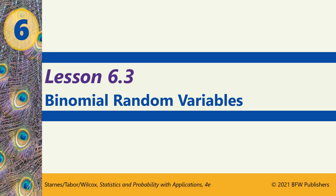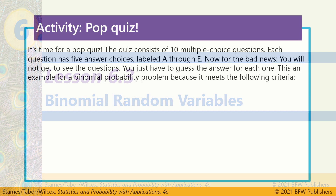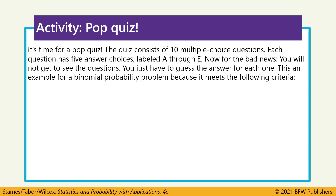6.3 Binomial Random Variables. To give an example of what a binomial random variable is, we're going to start this section with a pop quiz. The quiz consists of 10 multiple choice questions, each having 5 answers labeled A through E. You're not going to actually see the questions — you just have to randomly guess. So pick A, pick C, pick D, etc.